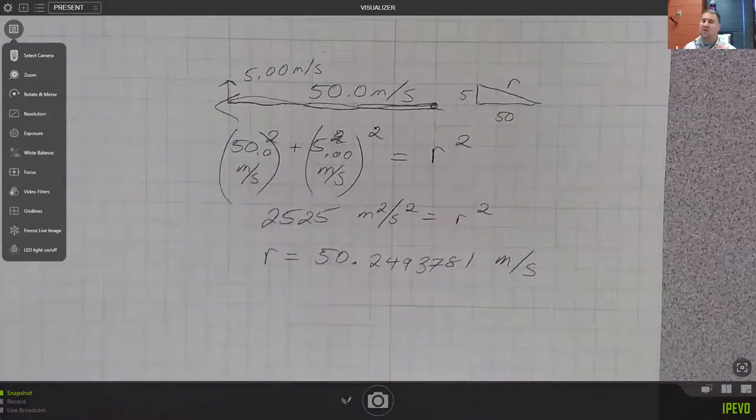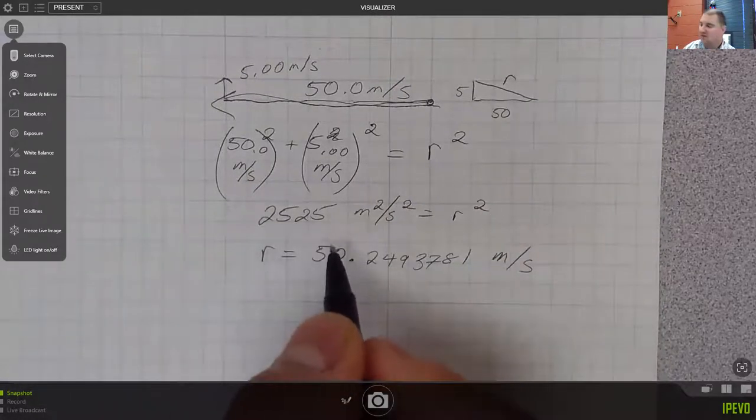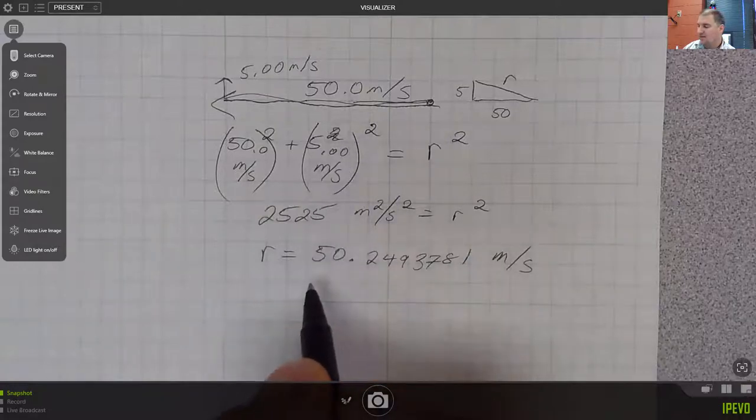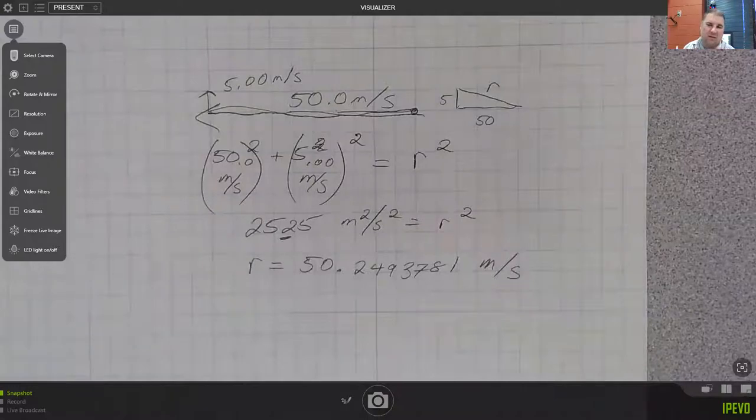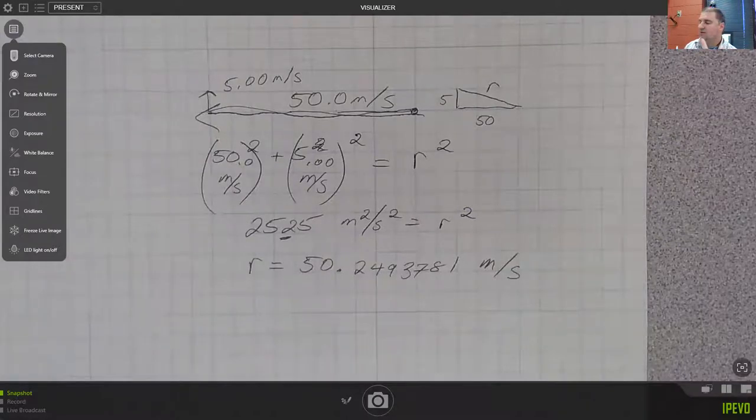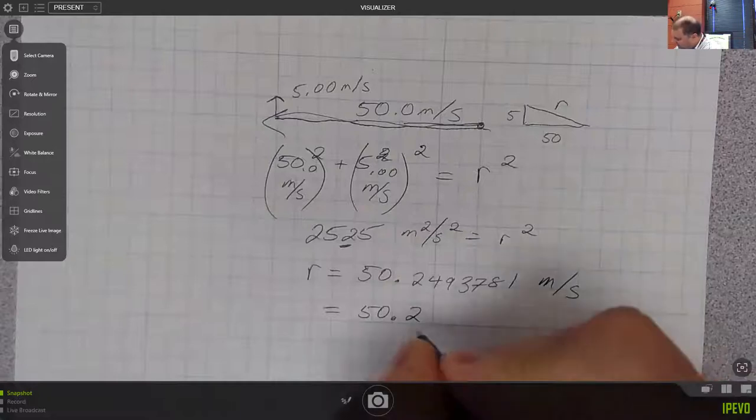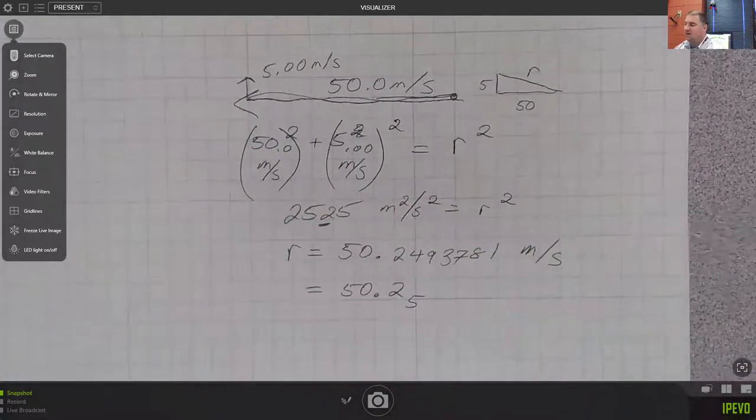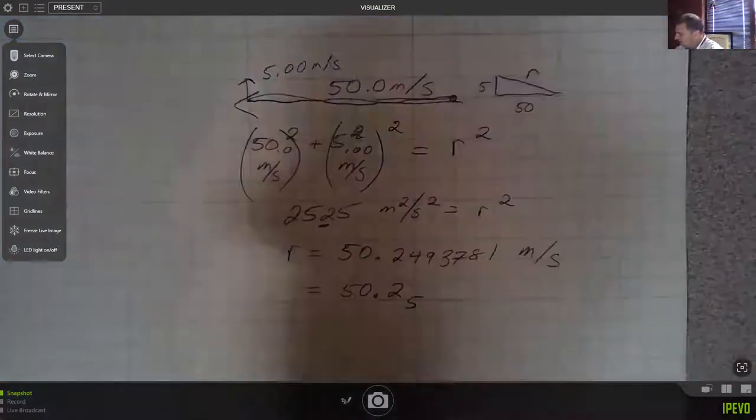But again, I would want to round that because thinking about my significant figures, all of my measurements here have three significant figures. Doing a square is really the same thing as multiplication. So my 2,500 would have three significant figures. My 25 at the end would have three significant figures. So really when I'm looking at this now and I take the square root of it, I really only still have three significant figures that I can keep. I didn't gain any more when I added the two squares. So when I take the square root, I should really only keep three sig figs still. So I would say this would be 50.2, and if you really wanted, you could keep one more place and it would be okay to keep a 5 in this case.